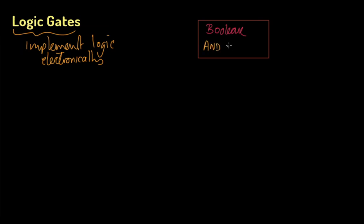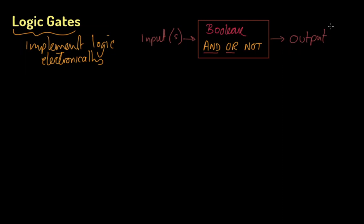We've got AND, OR, and NOT, and we might use them in programming as well. All three take at least one input. AND and OR take two inputs; NOT takes just one. They output a value which depends on the logical processing of the input. Boolean variables can only be zero or one, and the output can only be zero or one, so they're ideally suited to electronic components.